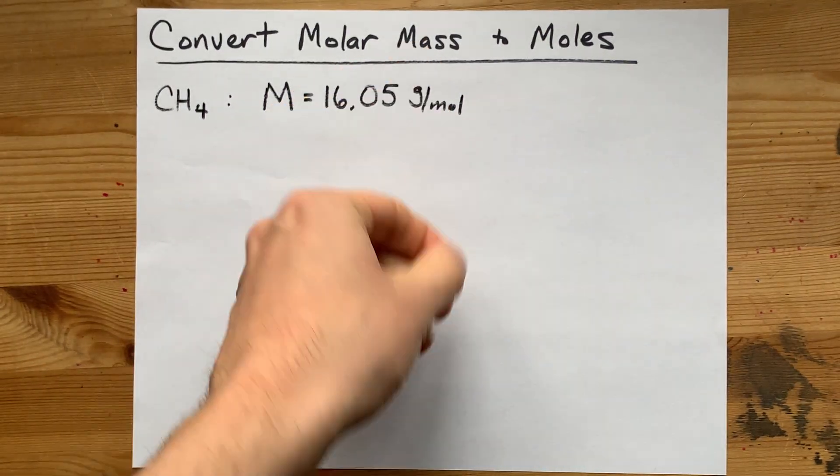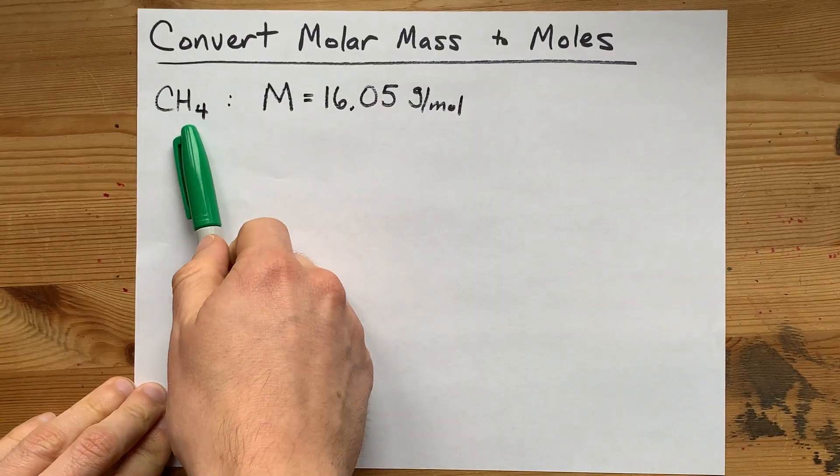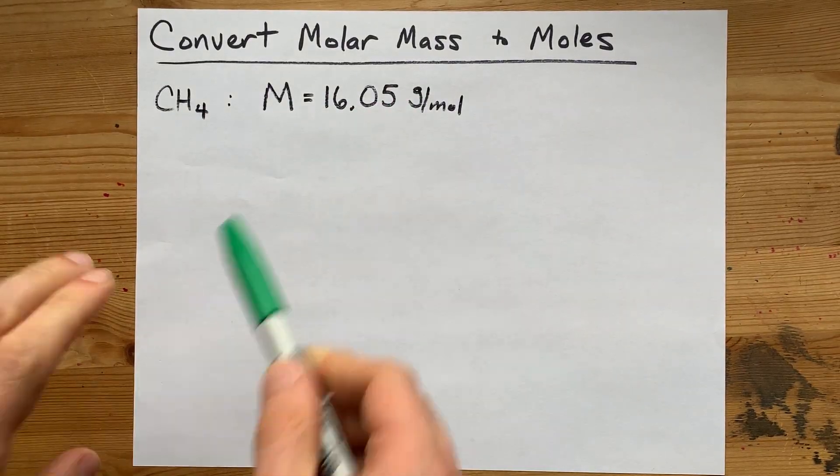How do you convert molar mass into moles? For example, methane, CH4, has a molar mass of 16.05 grams per mole.